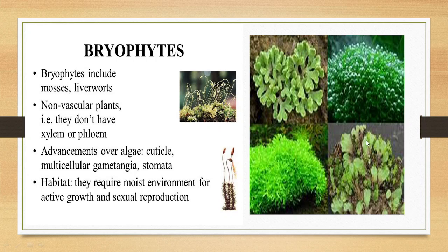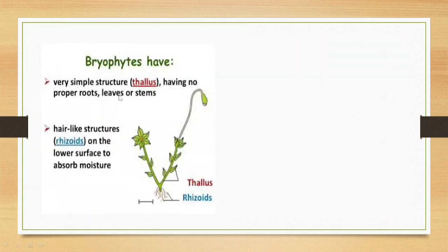Here are some Bryophytes growing in their natural habitat — mosses and liverworts. Bryophytes have a very simple body structure made up of a thallus body. They do not have any proper roots, leaves, or stems. In place of roots, they have structures known as rhizoids, which help in anchoring the plant body to the soil.